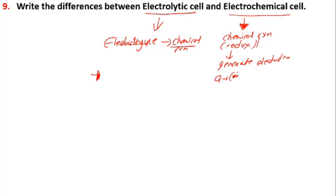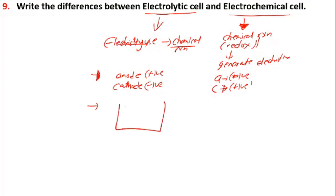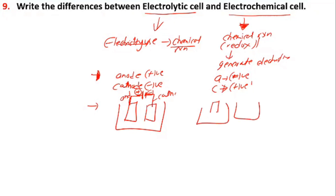In an electrochemical cell, the anode is negatively charged and the cathode is positively charged. In an electrolytic cell, we have cathode and anode compartments. The cathode is where reduction occurs and the anode is where oxidation occurs. This is the difference between the electrolytic cell and the electrochemical cell.